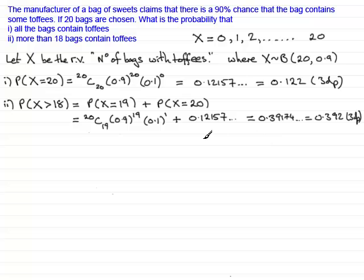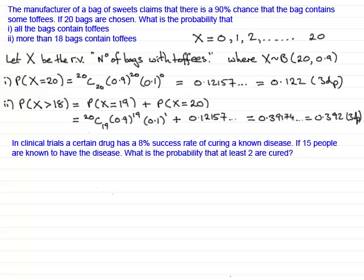Okay, let's have a look at another question. Now in this question, in clinical trials a certain drug has an 8% success rate of curing a known disease. And if 15 people are known to have the disease, what is the probability that at least two are cured?